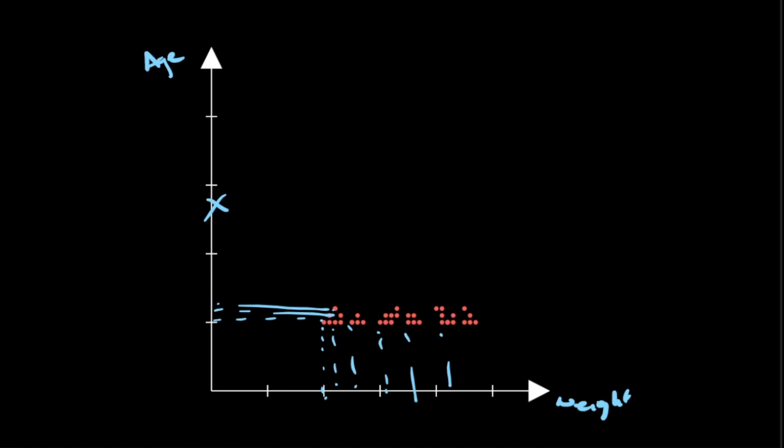I would almost have the same information as I would have if I captured both age and weight of the students from this data set. What this tells me is that the weight direction here captures the most information present in the data set.